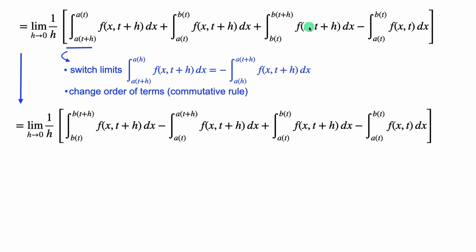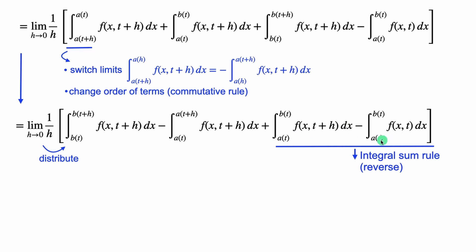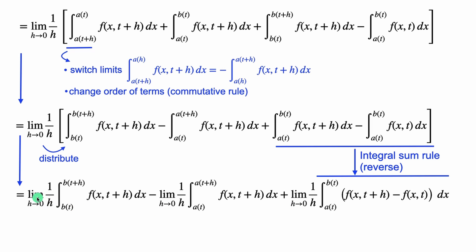We have the negative sign from flipping the first term's limits, the third term is here, and the second and fourth terms with the same limits are placed beside each other. From this point, we're going to distribute the limit inside for each term. We'll also merge the second and fourth terms together — it's like the integral sum difference rule in reverse. So we now have the limit as h goes to 0 of 1 over h in front of each term, and those two terms are merged into one by using the integral difference rule.